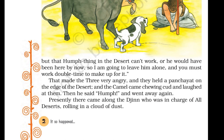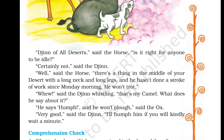Presently, there came along the Jinn who was in charge of all deserts, rolling in a cloud of dust. 'Jinn of all deserts,' said the horse, 'is it right for anyone to be idle?' 'Certainly not,' said the Jinn. 'Well,' said the horse, 'there is a thing in the middle of your desert with a long neck and long legs, and he hasn't done a stroke of work since Monday morning. He won't trot.' 'Phew,' said the Jinn, whistling. 'That's my camel. What does he say about it?' 'He says Hump, and he won't plow,' said the ox. 'Very good,' said the Jinn. 'I'll hump him if you will kindly wait a minute.'